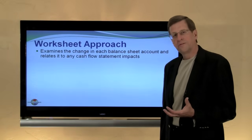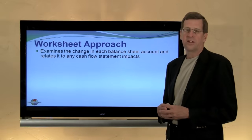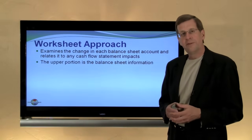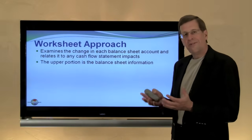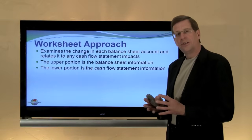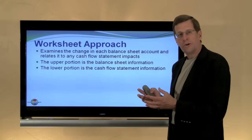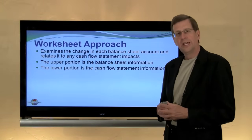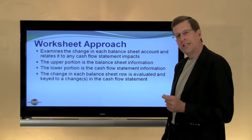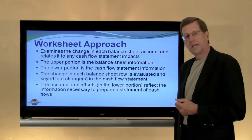Thinking about the structure of this worksheet, essentially it's a tool that examines the change in each balance sheet account and relates it to its effect on the Statement of Cash Flows. The upper portion of this worksheet is going to be reflective of the balance sheet — there's a column for the beginning balance sheet, a column for the ending balance sheet, and a debit-credit column to reflect the change in those amounts. The lower portion is going to correspond to the information needed to prepare the Statement of Cash Flows. For each change element identified in the upper portion, we identify a corresponding change portion in the lower portion of the worksheet. The change in each balance sheet row is evaluated and keyed to a change in the cash flow statement, and the accumulated offsets in the lower portion reflect the information necessary to prepare a Statement of Cash Flows.